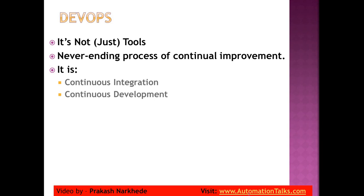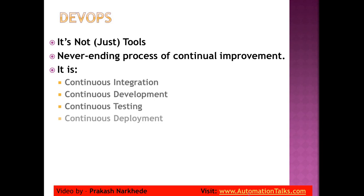DevOps includes continuous development, continuous testing, continuous deployment, and continuous monitoring. Everything — integration, development, testing, deployment, monitoring — comes under DevOps. For each of these phases there are different tools: integration tools, development tools, testing tools, monitoring tools. All of these are called DevOps tools. But DevOps is not only about tools — it is about a culture where all team members put their collective efforts to deliver something productive within a short span of time.